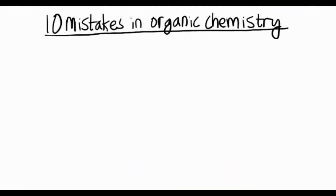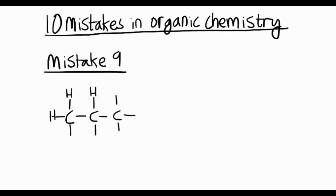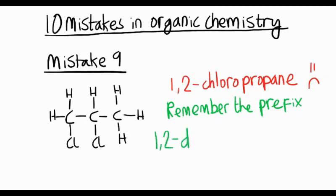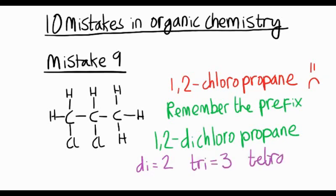Mistake 9 is to do with naming again. So let's try naming a molecule. We'll have a haloalkane with three carbons. Pop chlorines on those first two carbons. 1,2-chloropropane. That's the wrong name, but why? Remember, you've got to put prefixes in. We're missing the prefixes. It's 1,2-dichloropropane. Di means there's two chlorine atoms. Tri would be for three. Tetra would be for four.